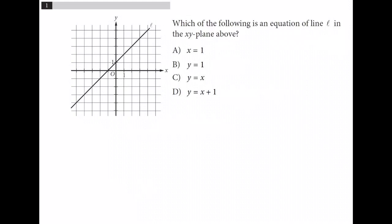Number 1, which of the following is an equation of line L in the xy plane to the left? Well for choice A here, the line x equals 1 is going to be a vertical line, like this.